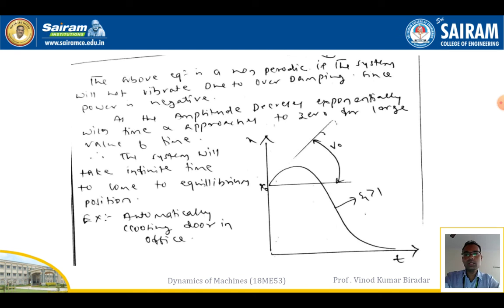This equation is non-periodic in nature. The system will not vibrate due to overdamping since the power is negative. As the amplitude decreases exponentially with time, it approaches zero for large values of time. Therefore, the system takes infinite time to reach equilibrium — for example, an automatically closing door in an office.